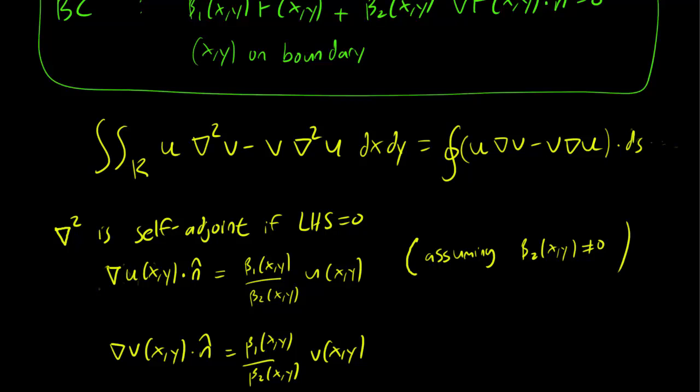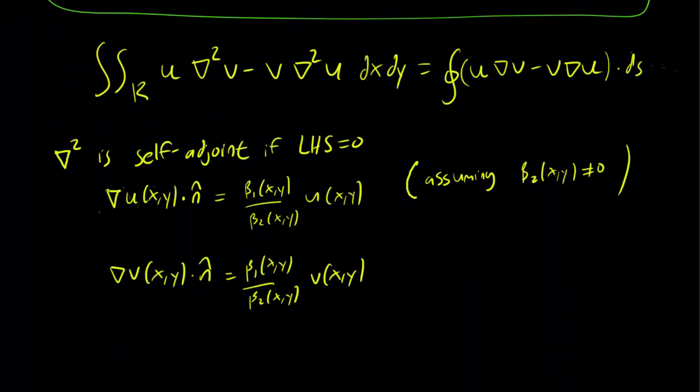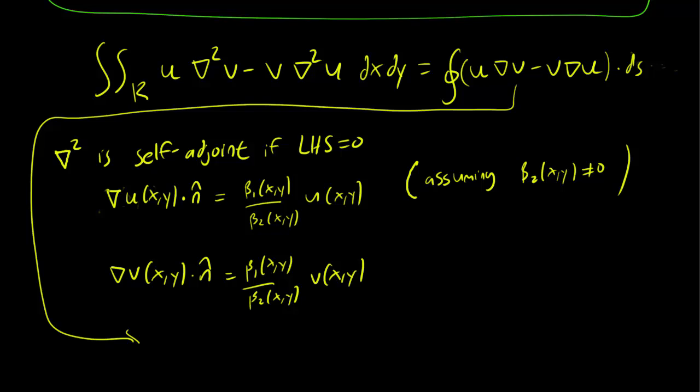And then, plugging this in to the right-hand side of the Green's formula, we have that the curve integral of u gradient of v dotted with n is just going to be beta 1 over beta 2 v minus v gradient of u dotted with n is just going to be beta 1 over beta 2 u ds.